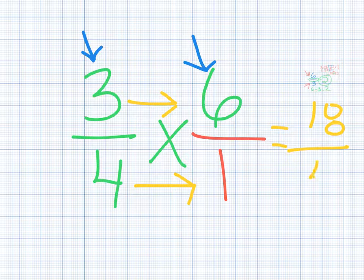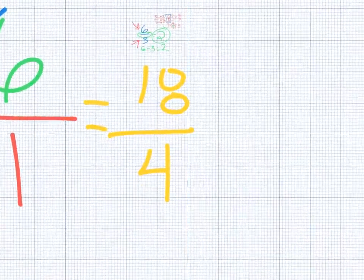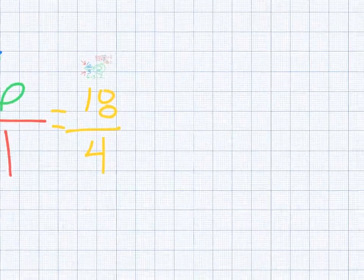Three times six and four times one. Eighteen over four. Okay, so now we have an improper fraction again, right? Three times six is 18, four times one is four. So 18 fourths is improper. We need to convert that.